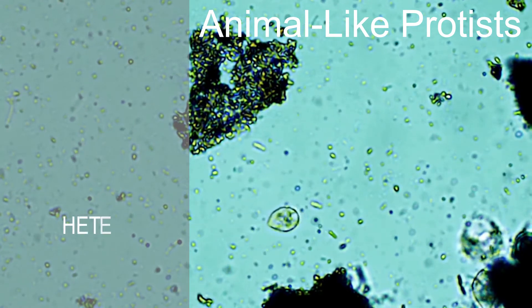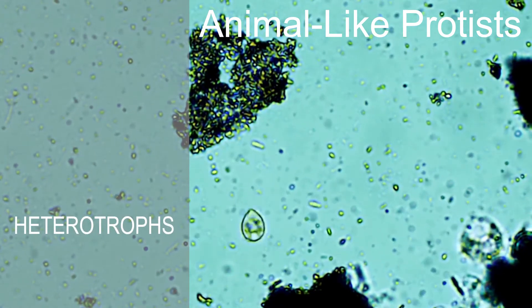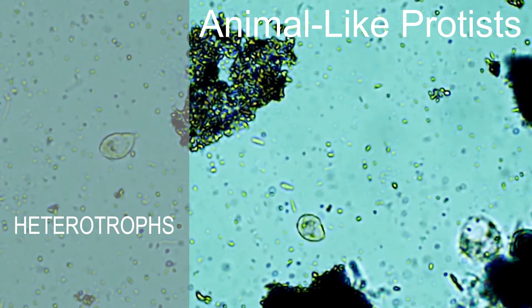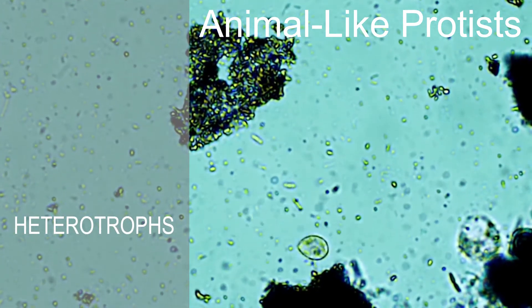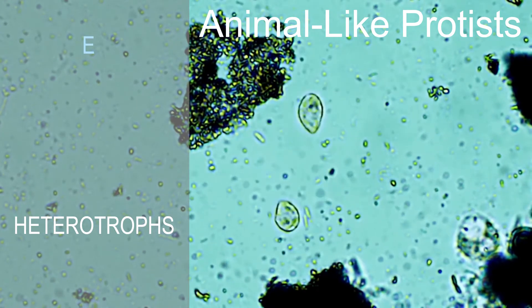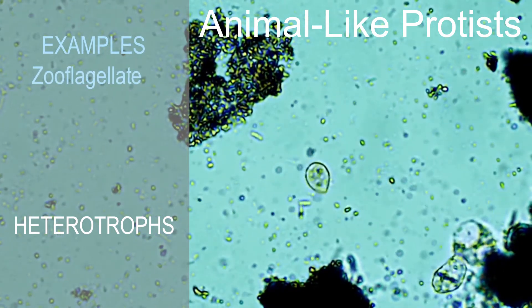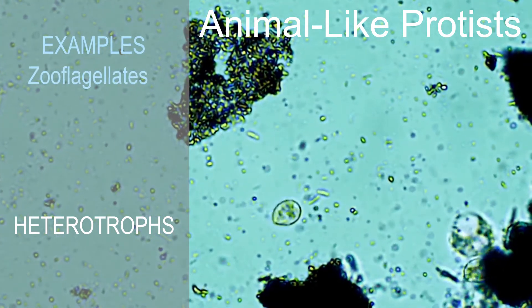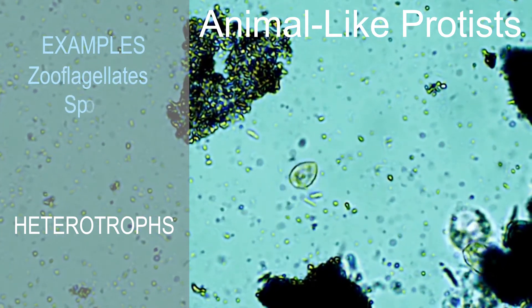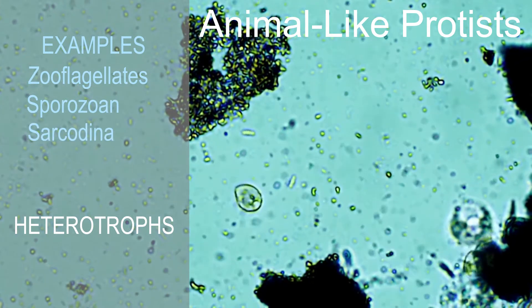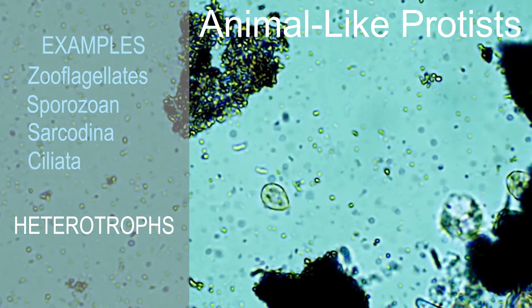Animal-like protists are considered heterotrophs, which means that they depend on other organisms for food. These protists include zooflagellates, sporozoans, sarcodina, and ciliata.